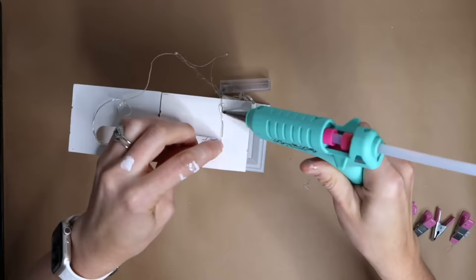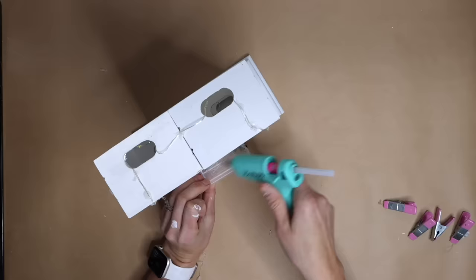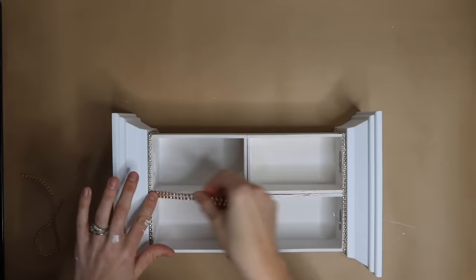Take fairy lights and weave it through the holes of the wood crates. Attach the second level of the combined wood crates and do the same thing with the fairy lights. To cover up the seams, take rhinestone ribbon and glue into place.